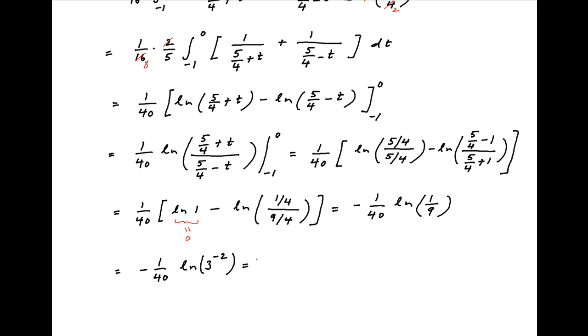Using properties of logarithms, this simplifies to minus 2 divided by minus 40 times ln 3, which equals 1 upon 20 times ln 3, which is the value of the given integral.